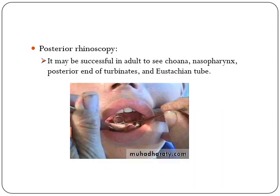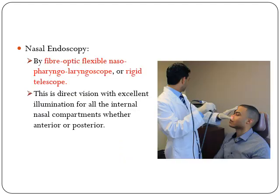Posterior rhinoscopy may be performed in adults to visualize the choana, the nasopharynx, posterior end of the turbinates, and the Eustachian tube orifice. Nasal endoscopy using fiber optic flexible nasopharyngoscope or rigid telescope provides guided vision with excellent illumination for all internal nasal compartments with the anterior speculum.